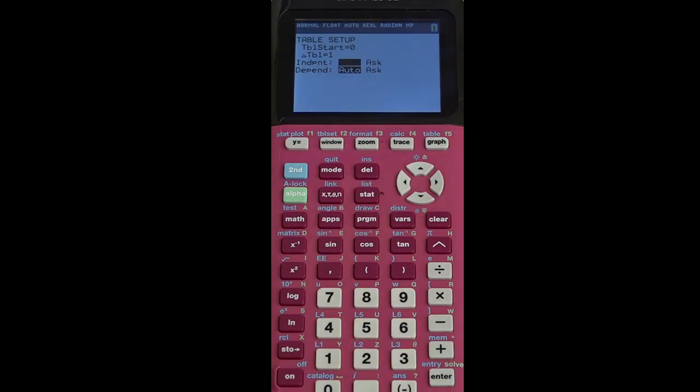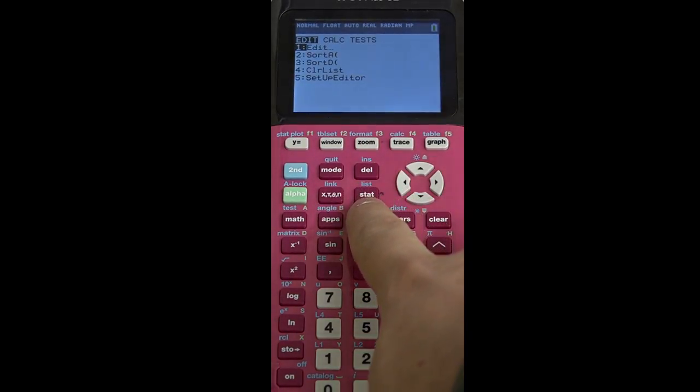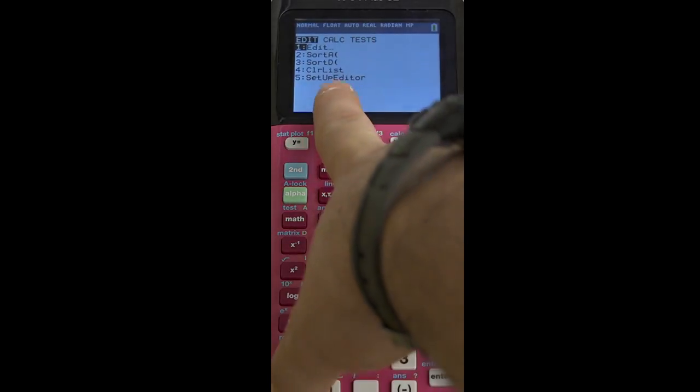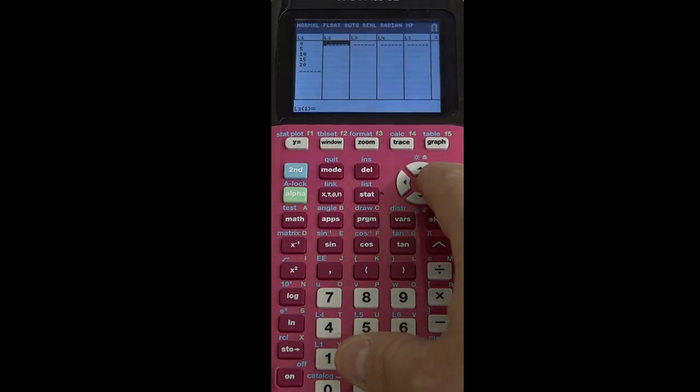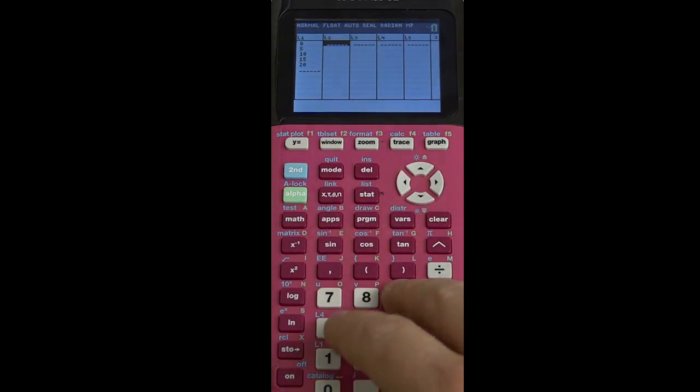The other thing that you might not know, you should, but you might not, is how to put in data. So we're going to push this stat button here, and the first choice, we're going to edit some of our statistics. We want to put in some x and y data. So I'm going to take the data from page 3 of the textbook there for the example problem, and I'm going to put in 0, 5, 10, 15, 20 for my x values.